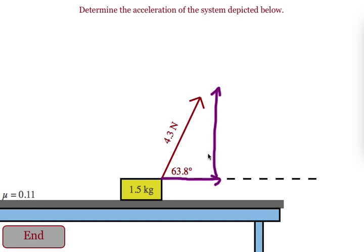One part is going to be pulling the block up off the table slightly. We'll call that tension in the Y direction. One part is going to be accelerating the block forward. We'll call that tension X.